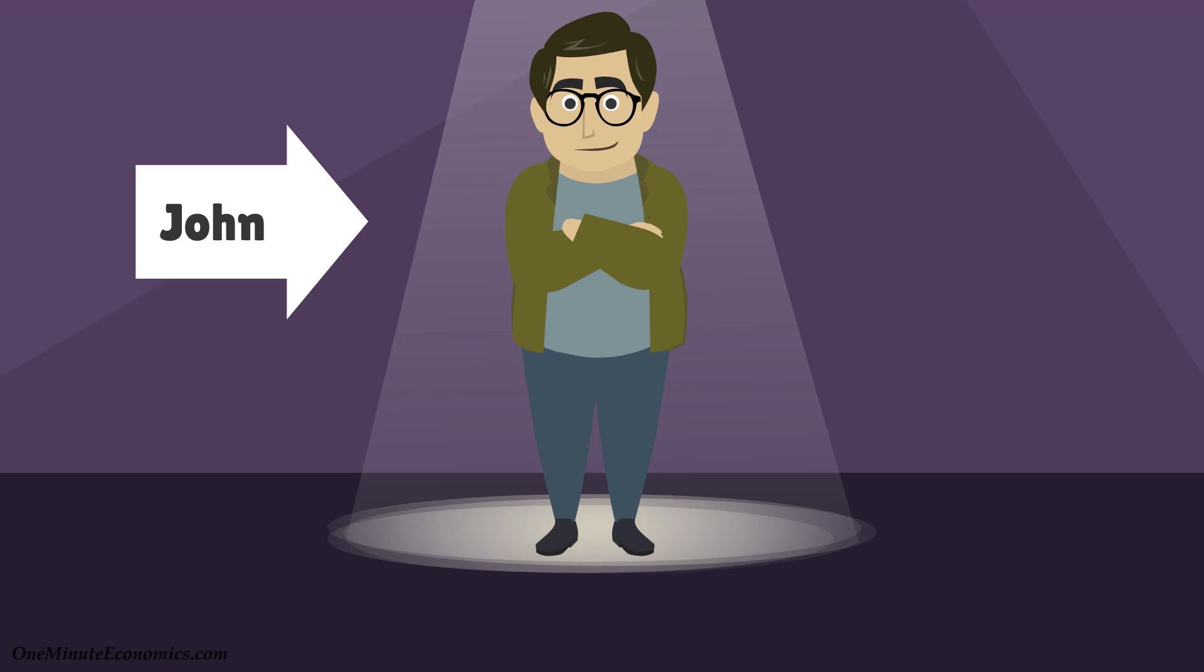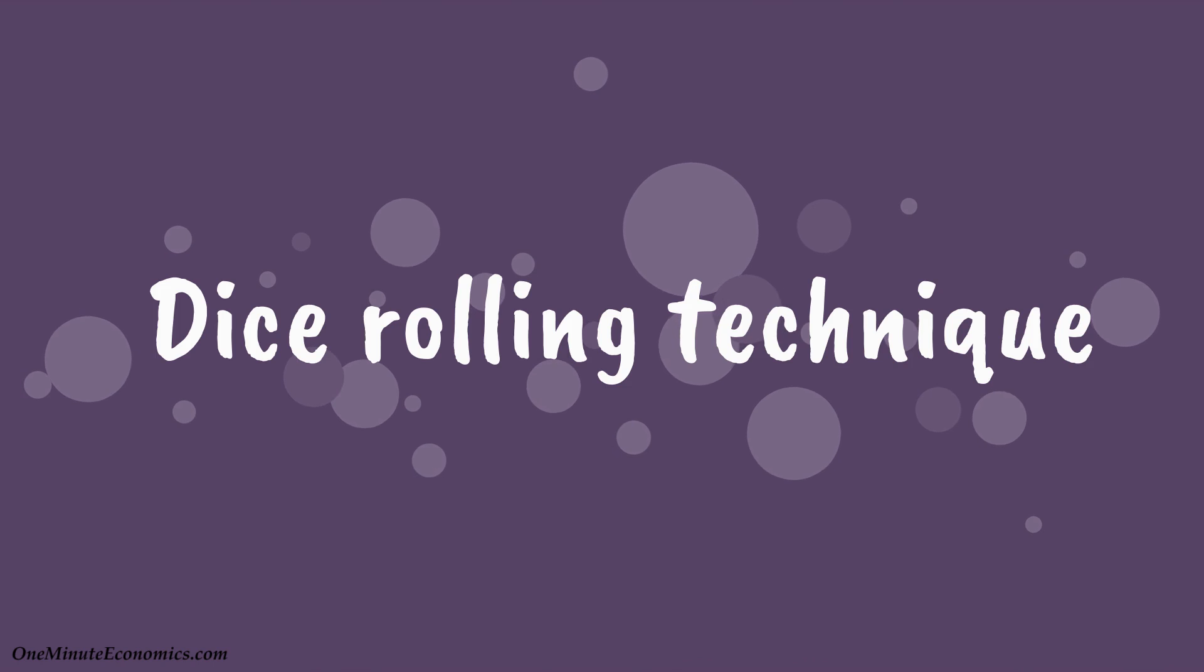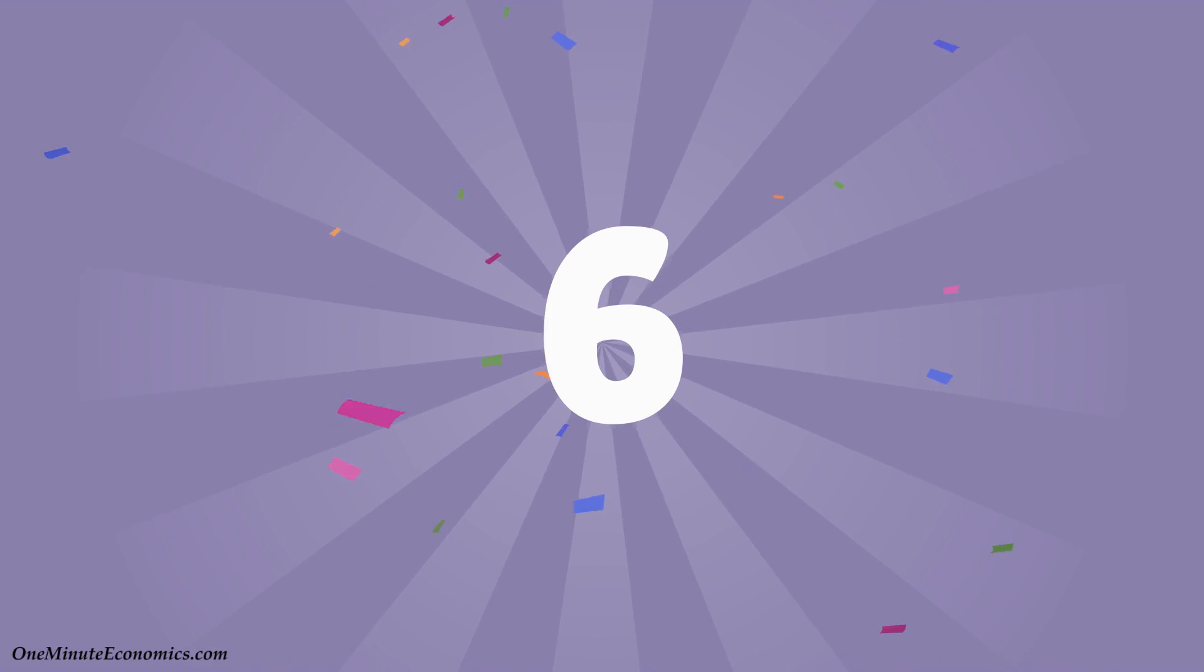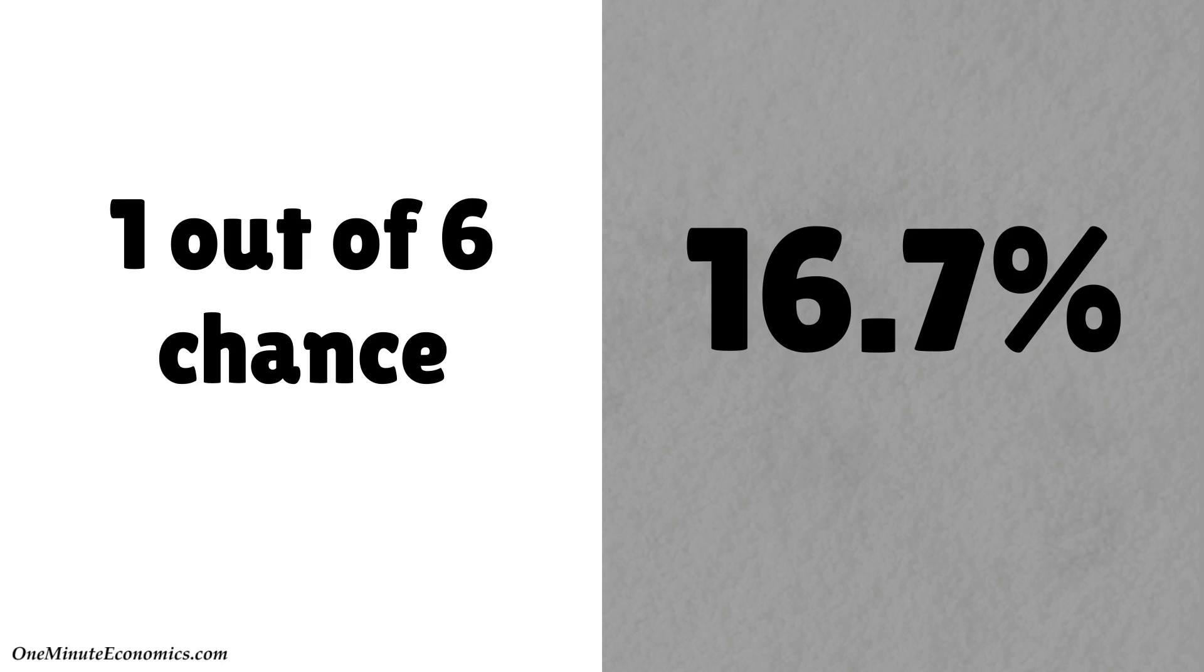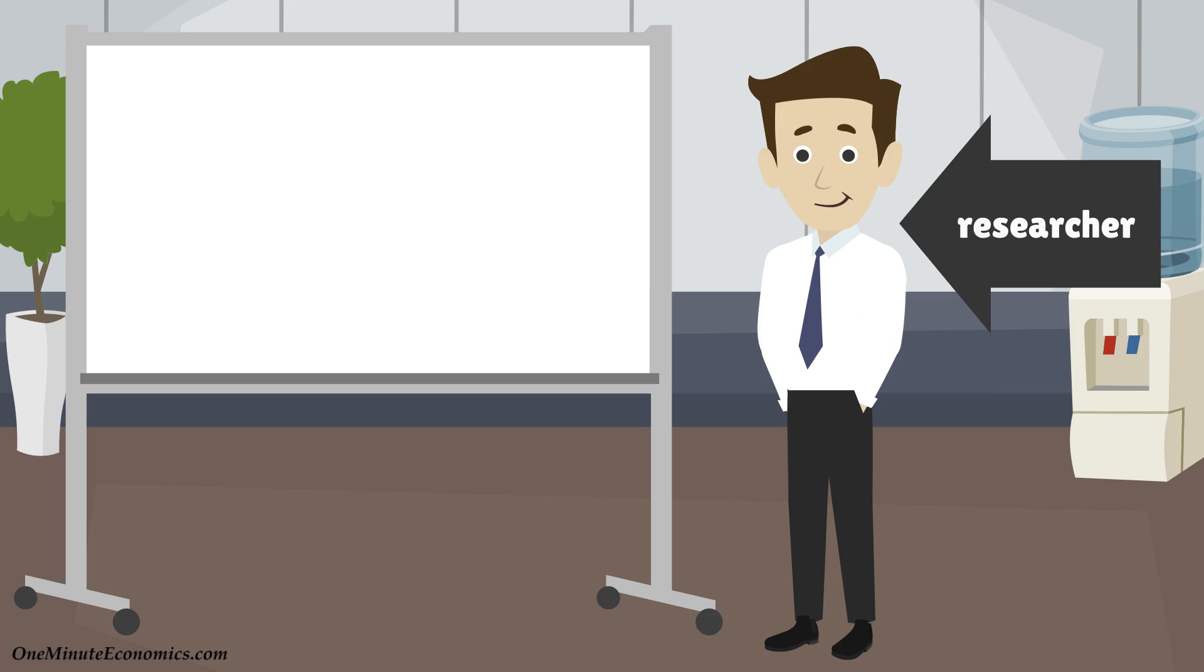Let's assume John tells you he discovered a special dice rolling technique that enables him to roll a 6 more frequently than the average person. To prove it, he rolls a dice in front of you and it actually ends up being 6. However, it's not enough to impress you because it might simply be a matter of luck, as there's a 1 in 6 or roughly 16.7% chance of that happening regardless of which dice rolling technique you use.